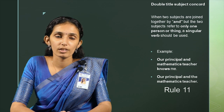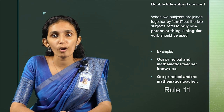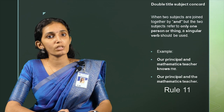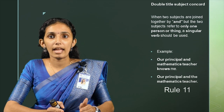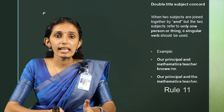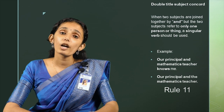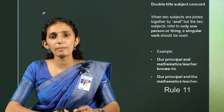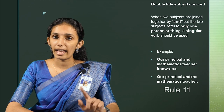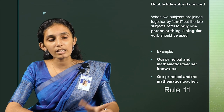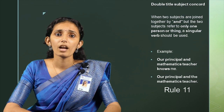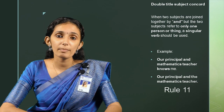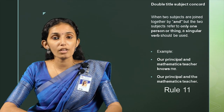Rule number 11: Double title subject concord. When two subjects are joined by AND but refer to only one person or thing, a singular verb should be used. For example, 'Our principal and mathematics teacher knows me' — the principal is also the mathematics teacher, so the subject is singular. But 'Our principal and the mathematics teacher' refers to two different people because of the use of 'the mathematics teacher.'